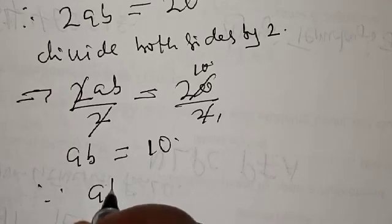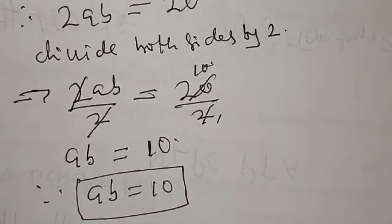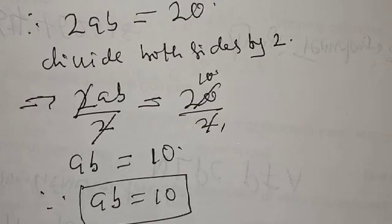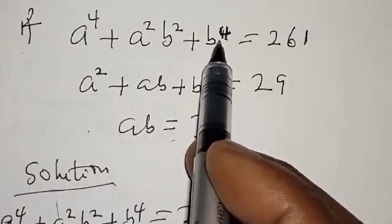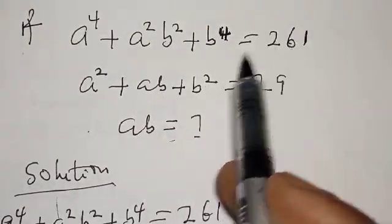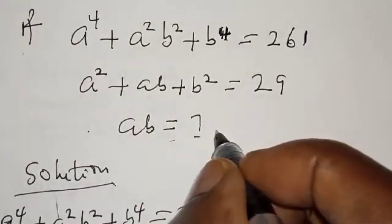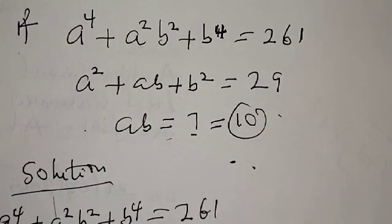Therefore, our final answer is ab equals 10. If you've enjoyed the class, please don't forget to like, share, comment, and subscribe. The question asked us to find the value of ab from the given equations, and ab equals 10. If you have any alternative method, you may put it in the comment section. Thank you.